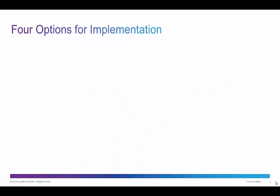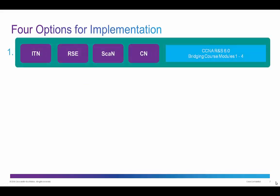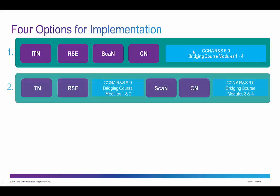Let's look at four possible implementations of the bridging course content. The first and simplest option is to continue teaching the 5.x courses 1 through 4, then create a new bridging course and teach modules 1 through 4. The second option, if you're focused on ICND1, CCENT, and ICND2, is to split it: teach ITN and RSE courses, create a bridge course and teach modules 1 and 2, then finish with the third and fourth courses followed by bridging modules 3 and 4.